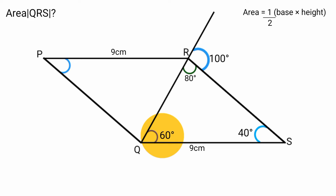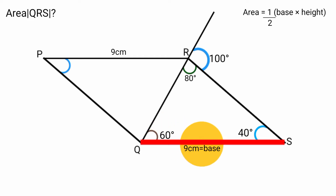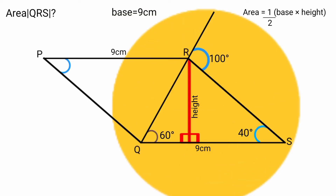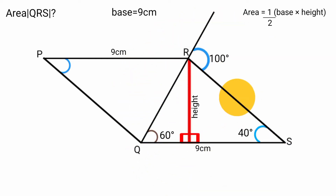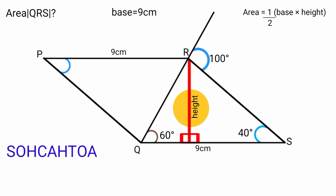Since none of the angles of the triangle are equal, triangle QRS is a scalene triangle, so we can take any side as the base. Let's take line QS as the base, which is 9 centimeters in length. Now we need to find the height.